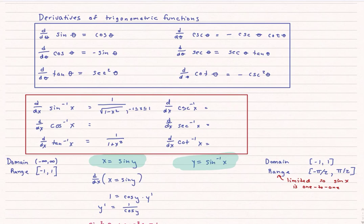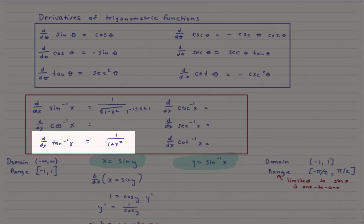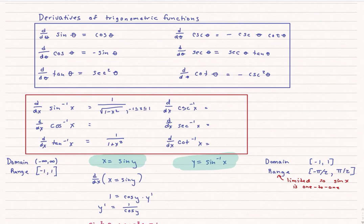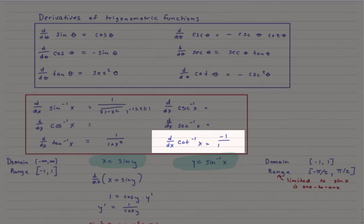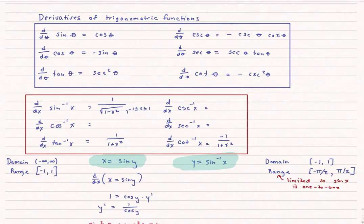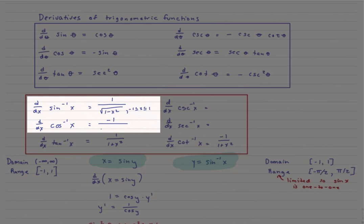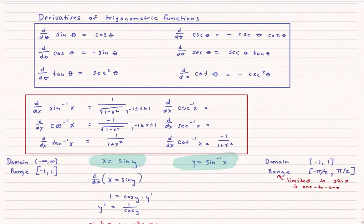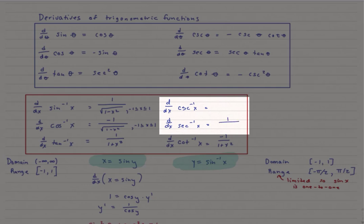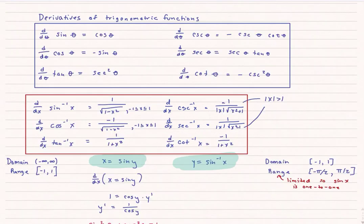Now I'll fill in the rest of the table. Inverse tangent is already written in. Inverse cotangent is very similar — it's simply negative 1 over 1 plus x squared. Inverse cosine and inverse sine are also similar, except the numerator is negative 1, and just like sine, cosine is limited to domain negative 1 to 1. I'm not going to prove inverse secant and inverse cosecant — I'll just give them to you. Inverse secant is 1 over the absolute value of x times the square root of x squared minus 1, and inverse cosecant is that same expression with a negative sign. For both, the absolute value of x must be greater than 1.